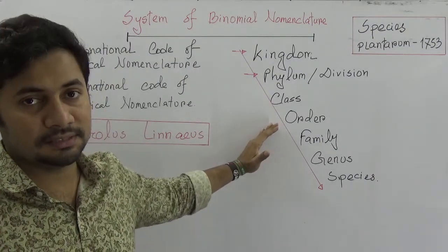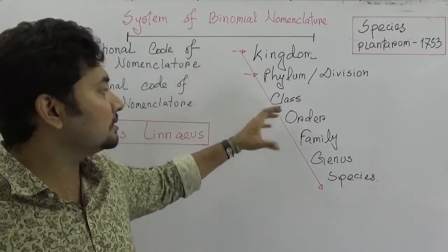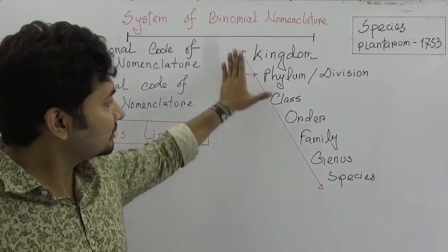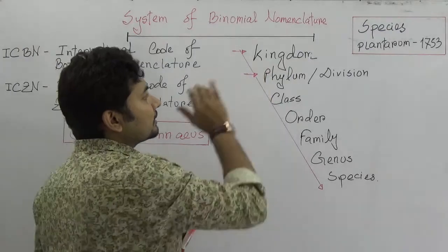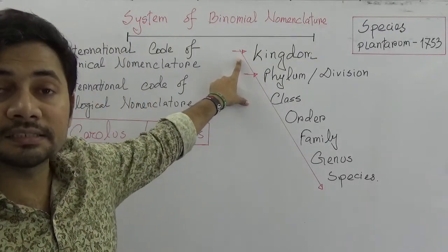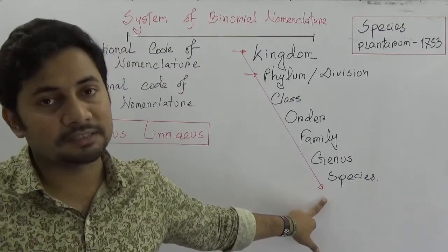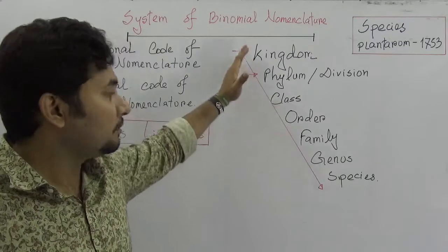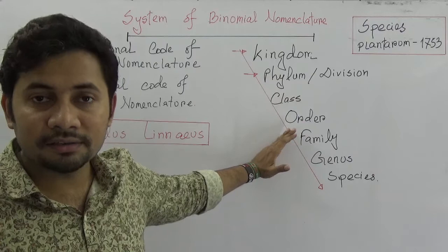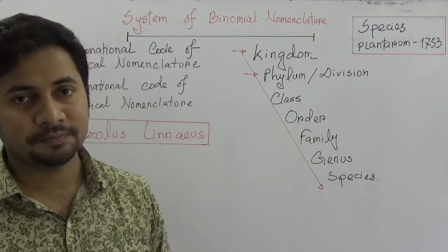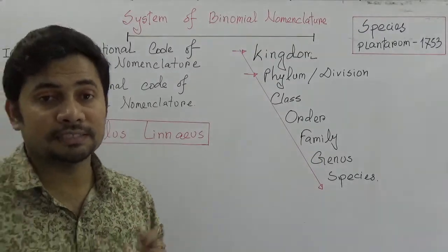It is very important to maintain the order of sequences in classification because we cannot shuffle or exchange the rank, as each is specific and dignified. Kingdom is the largest rank or taxa, and species is the smallest rank. Dividing them, we get: Kingdom, Phylum or Division, Class, Order, Family, Genus, and Species.